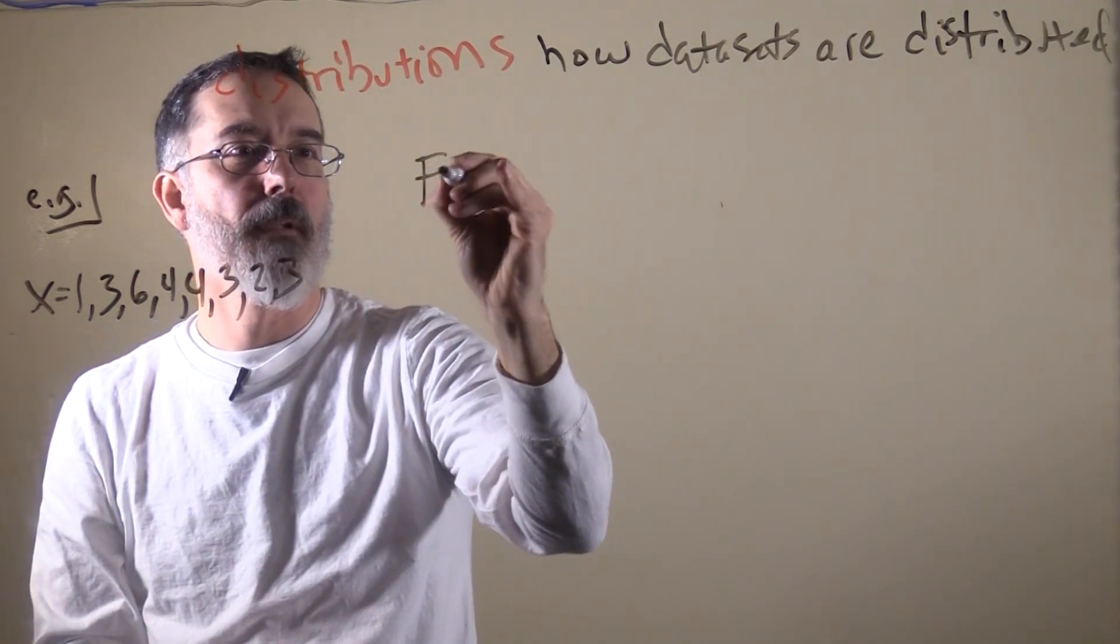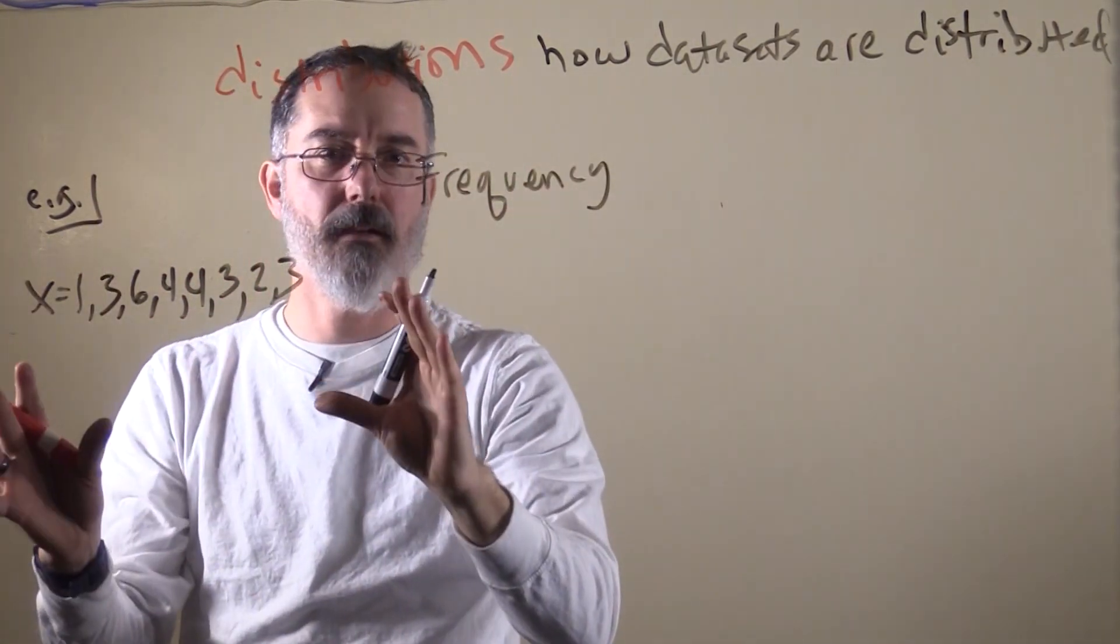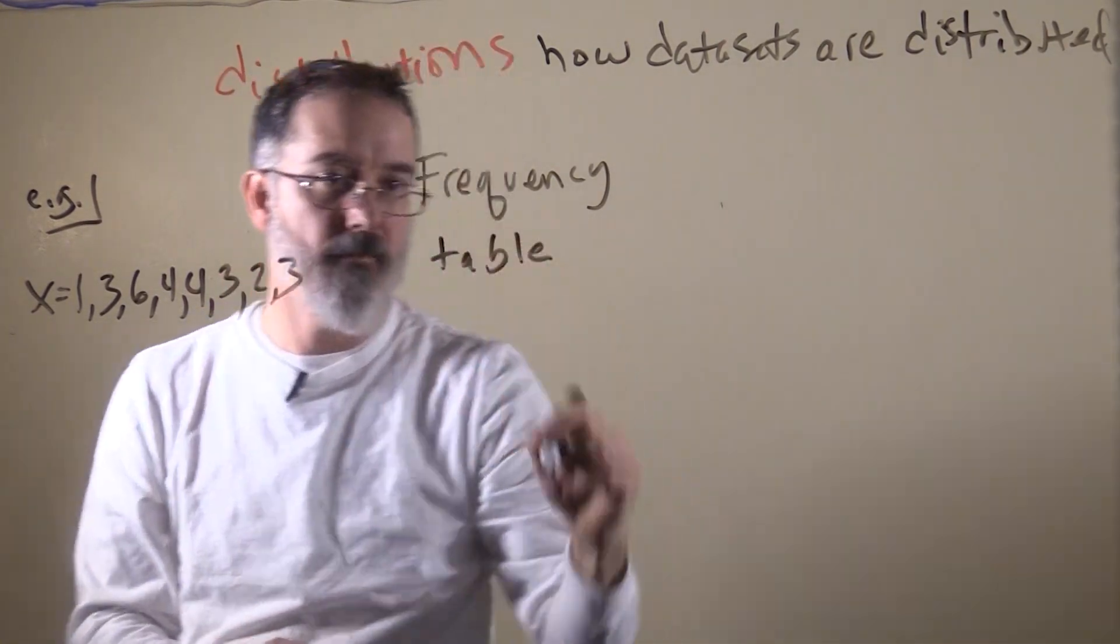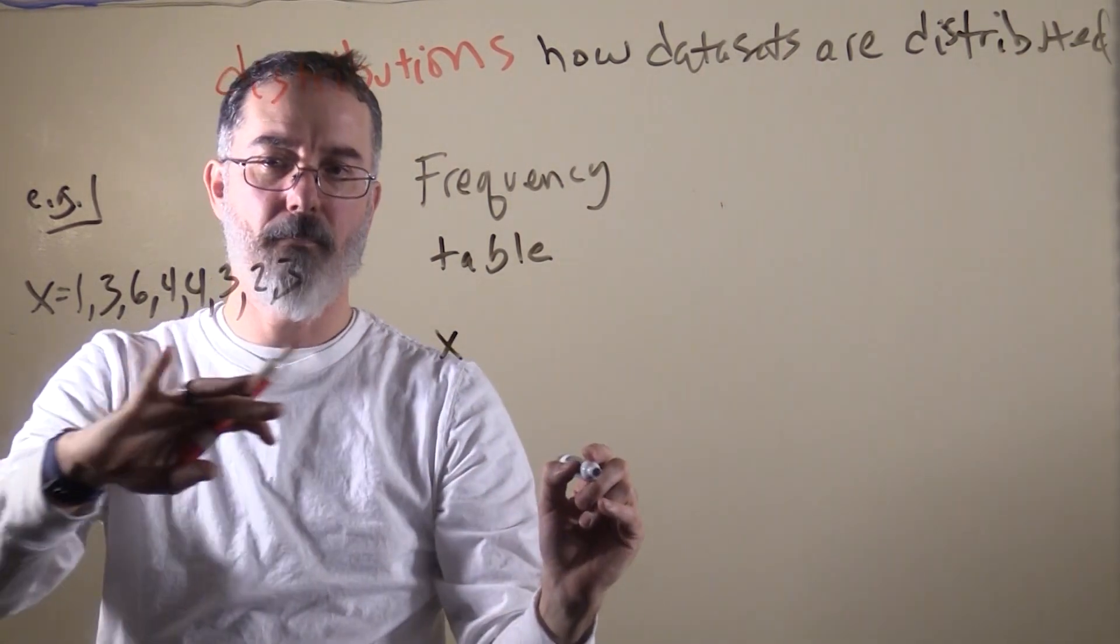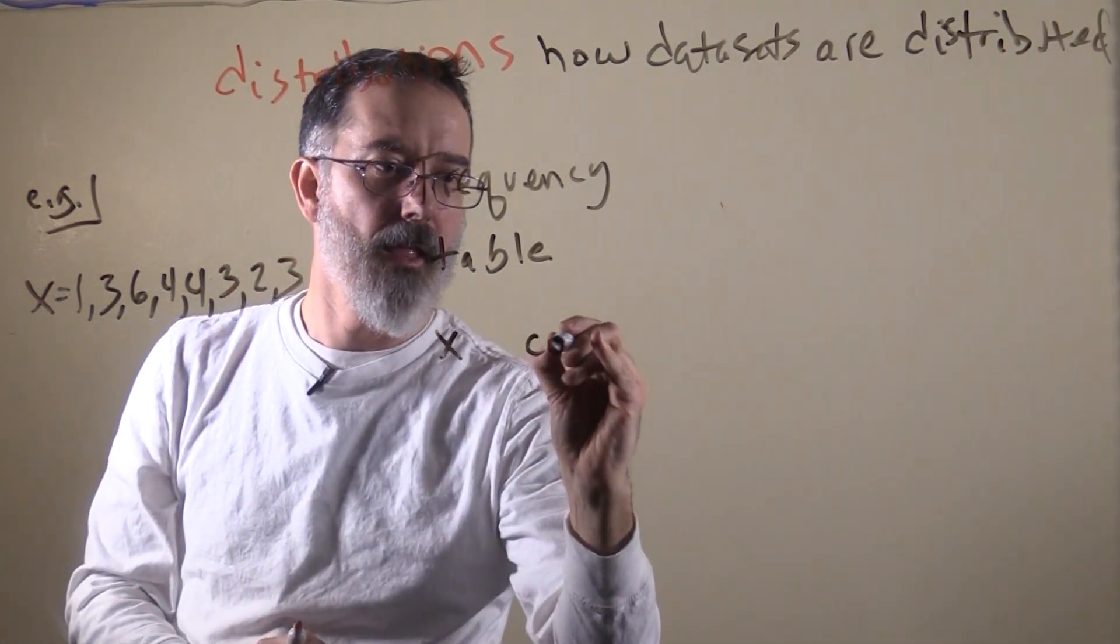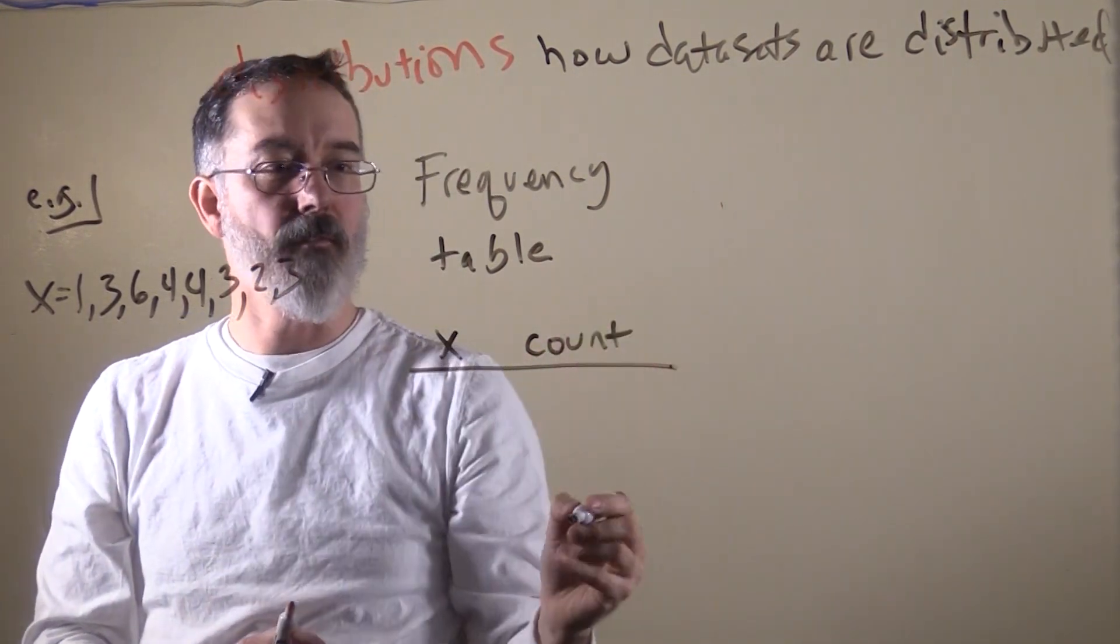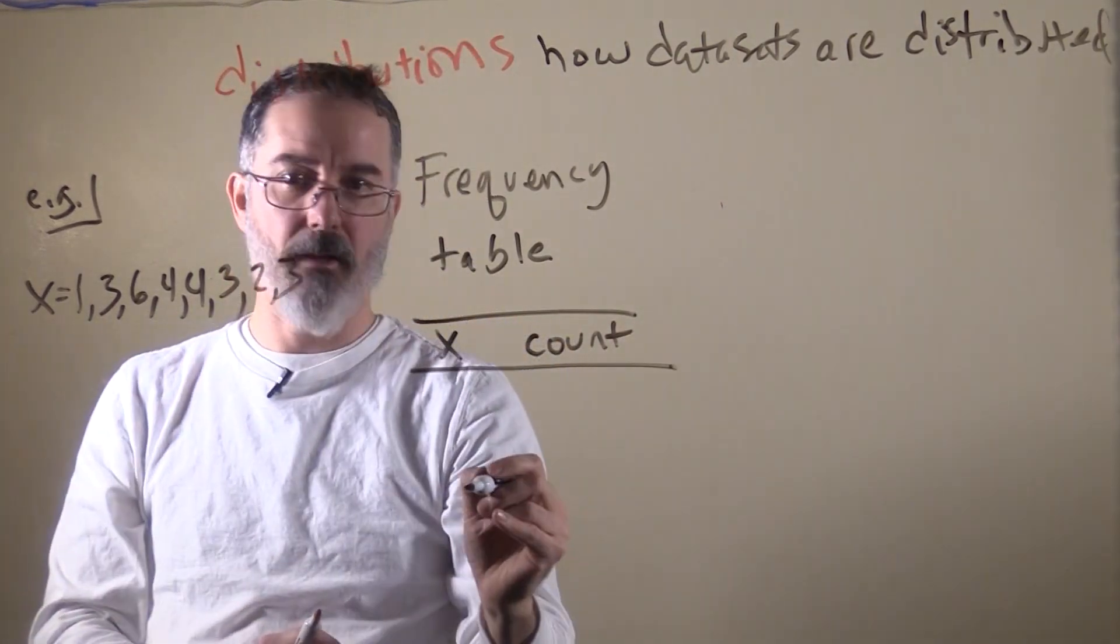One way to do that, to summarize this data, is with a frequency table. And so for that what we are going to do, is we are going to have one column that is for the different values of these scores, and another one that is the count. We could have put like an F there for frequency, which means the same thing as count.